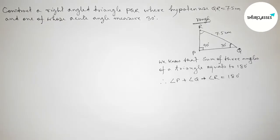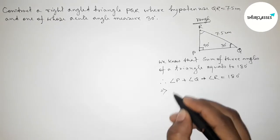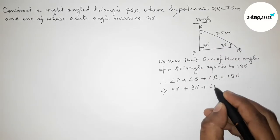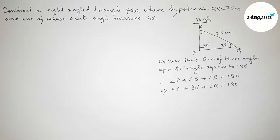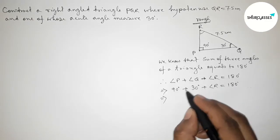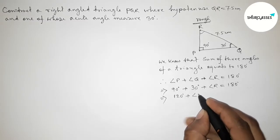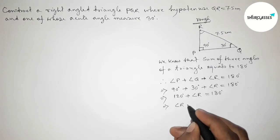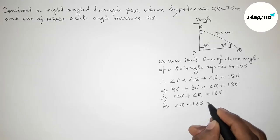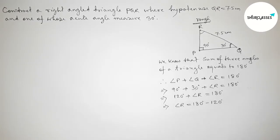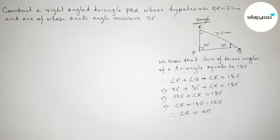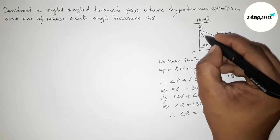Therefore, angle P plus angle Q plus angle R equals 180 degrees. Putting in the values: 90 degrees plus 30 degrees plus angle R equals 180 degrees. This gives 120 degrees plus angle R equals 180 degrees, which implies angle R equals 60 degrees.